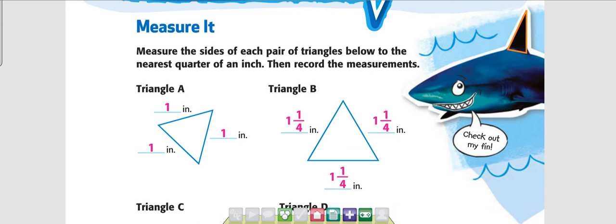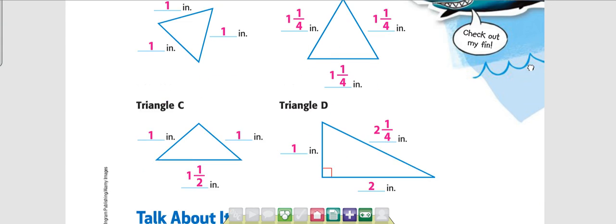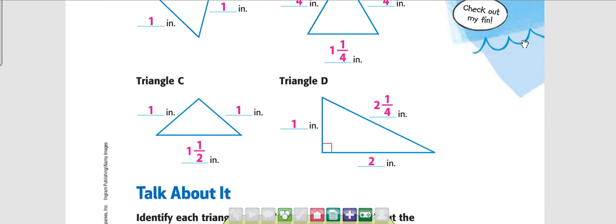What we found out is that triangle A — all the sides are equal to one inch. Triangle B — all the sides are equal to one and one-fourth inch. Triangle C: two sides are equal to one inch, and the bottom side is equal to an inch and a half.